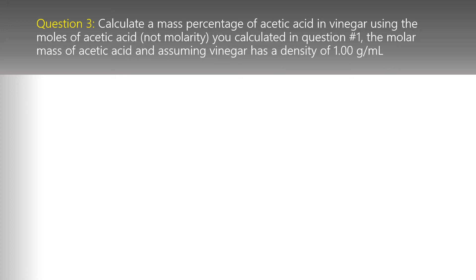Question three: calculate the mass percentage of acetic acid in vinegar using the moles of acetic acid (not molarity) from question one, the molar mass of acetic acid, and assuming vinegar has a density of 1.00 g/mL. The biggest mistake people make here is grabbing the last answer from question one — but that was the molarity of acetic acid, not the moles.